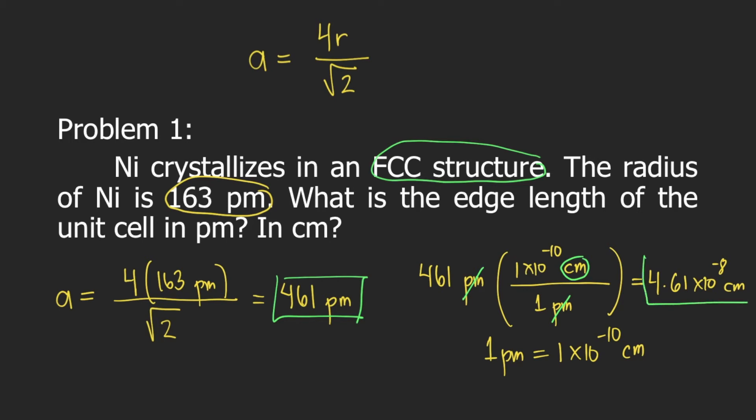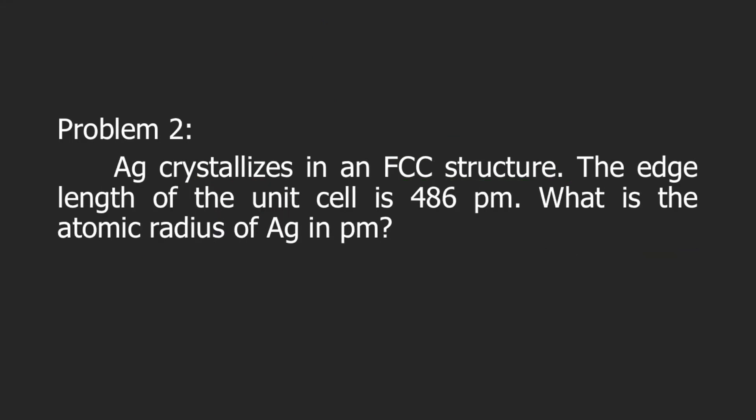This is your edge length in centimeters. Sometimes your professors will not ask you for the edge length. Instead, they will give you the edge length and ask you to solve for the radius of the atom. For example, in problem number 2: silver crystallizes in an FCC structure. The edge length of the unit cell is 486 picometers. What is the atomic radius of silver in picometers? This is still FCC structure, and the formula we have is A equal to 4R divided by square root of 2.